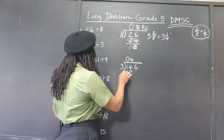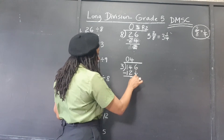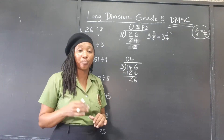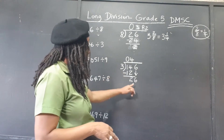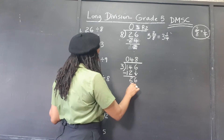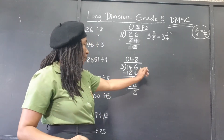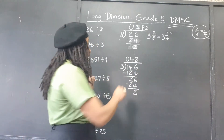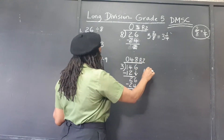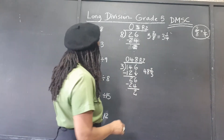Now we subtract: 14 take away 12 is 2, and we carry down the 6, making 26. Starting the process over: 3 into 26 goes 8 times; 8 times 3 is 24; 26 take away 24 is 2. We have nothing more to carry down, so the answer is 48 remainder 2, or 48 and 2 over 3.